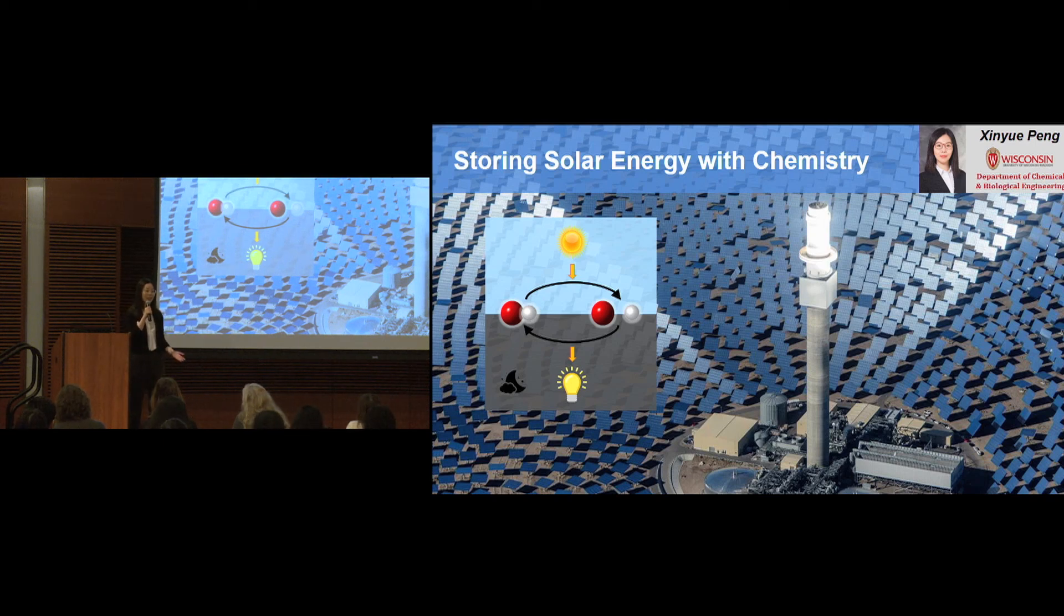Imagine one day in the future, all gas stations are replaced by solar stations. Instead of gas, our cars are now run on these special chemicals that harvest solar energy and do not emit CO2. On that day, we are living in a truly sustainable world.